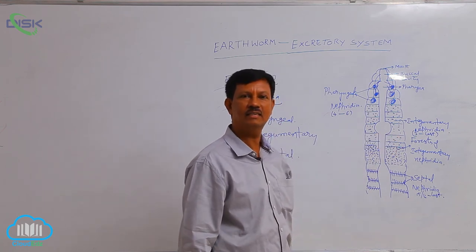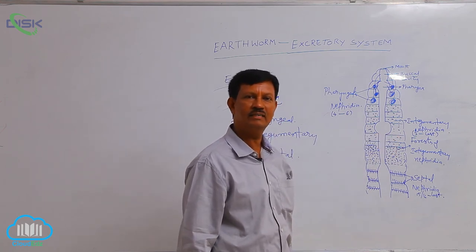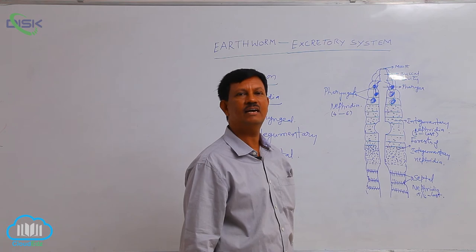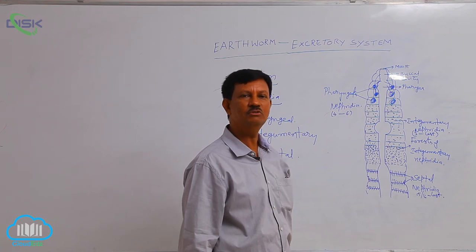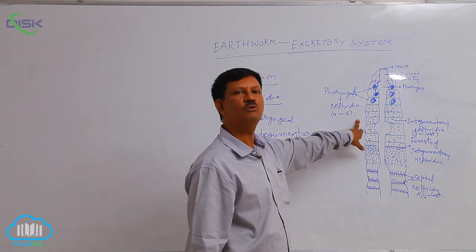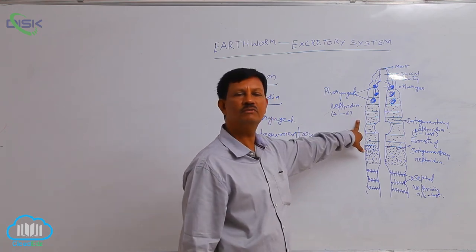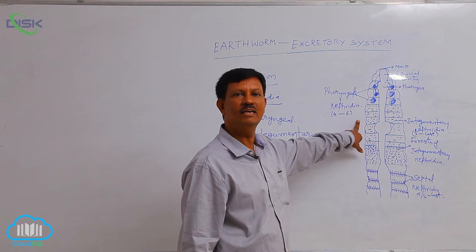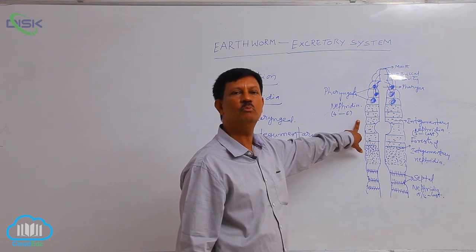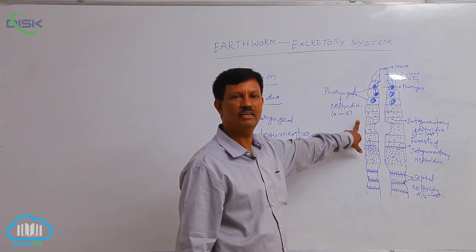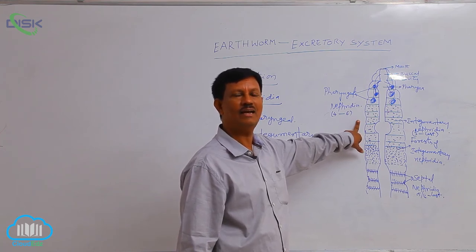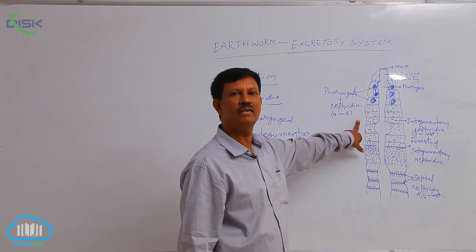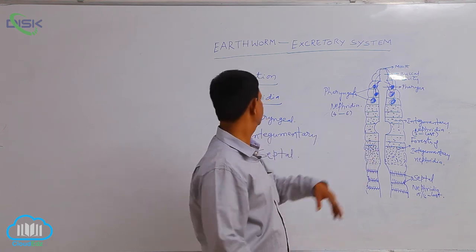They are known as integumentary nephridia. They are very minute nephridia which open to the outside through pores known as nephridiopores. Through the nephridiopore, they send the nitrogenous waste material from the inner side to the outer side.